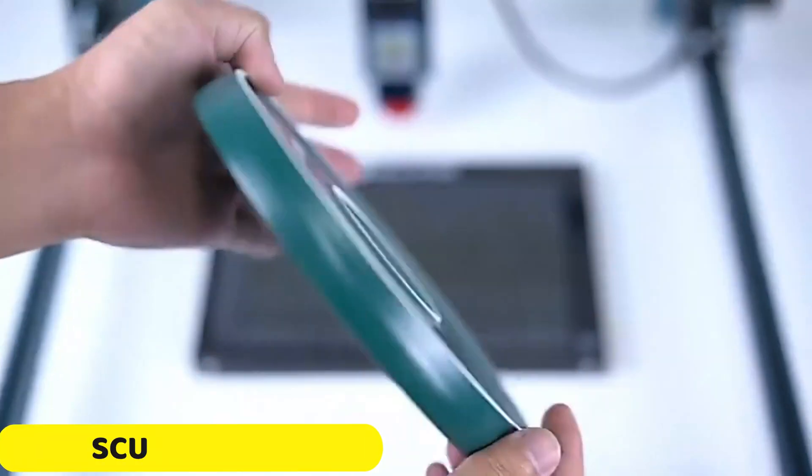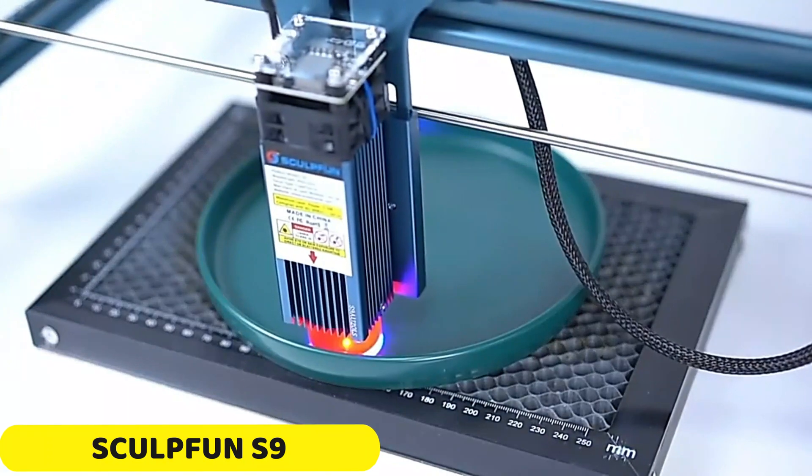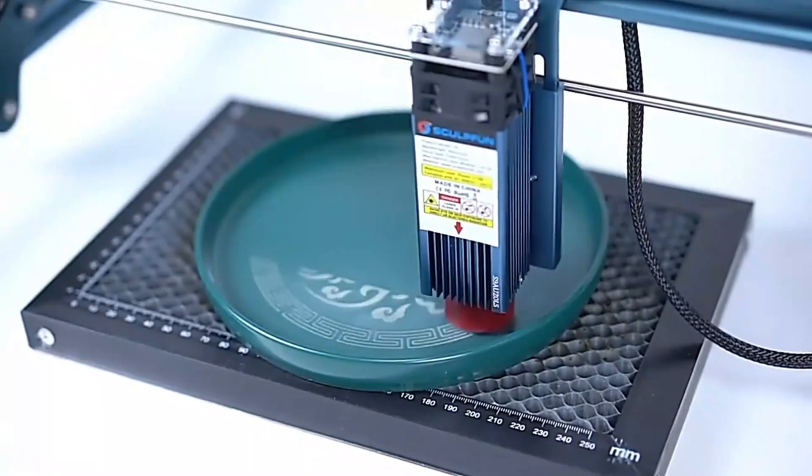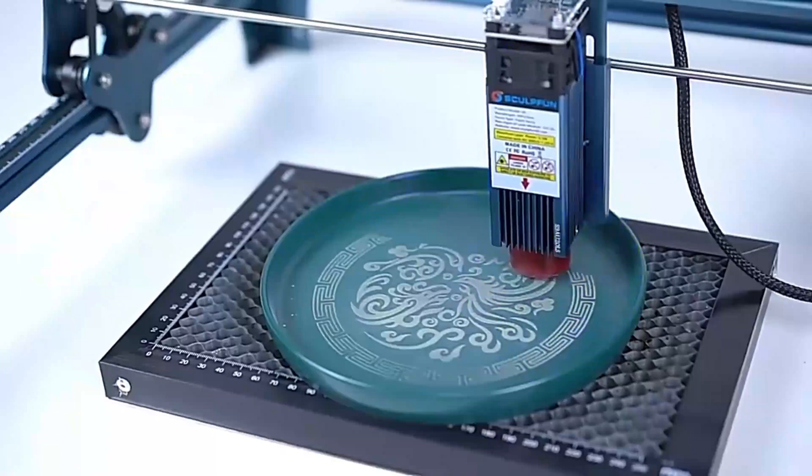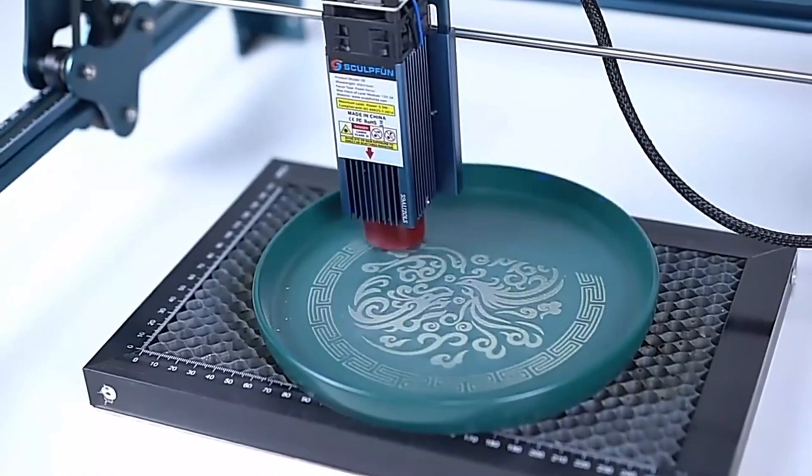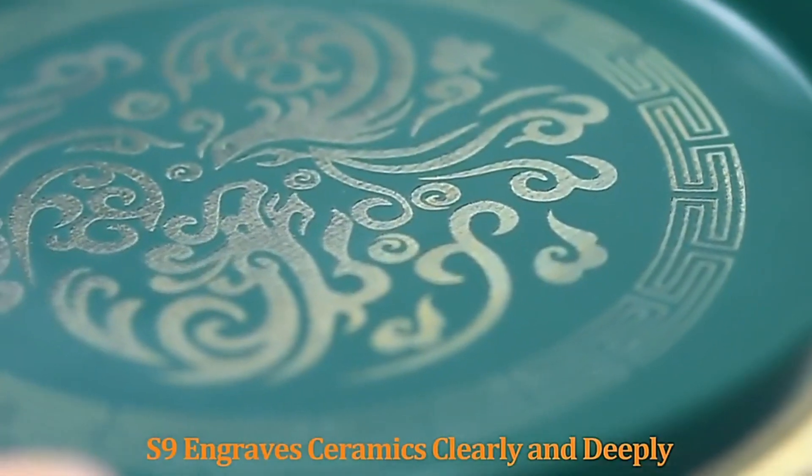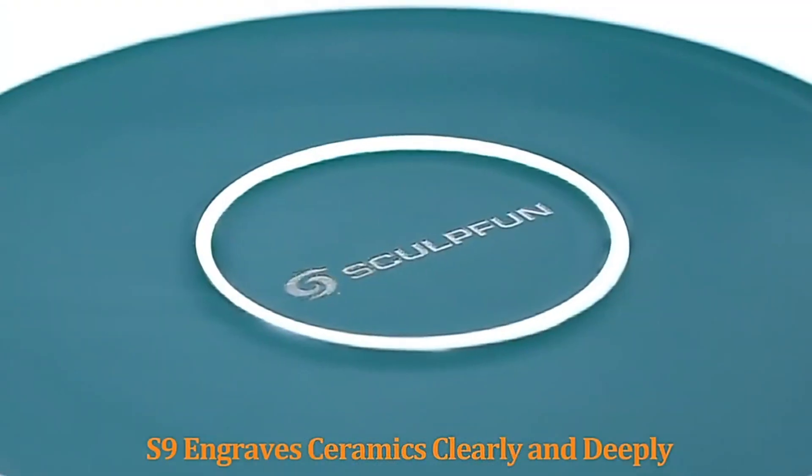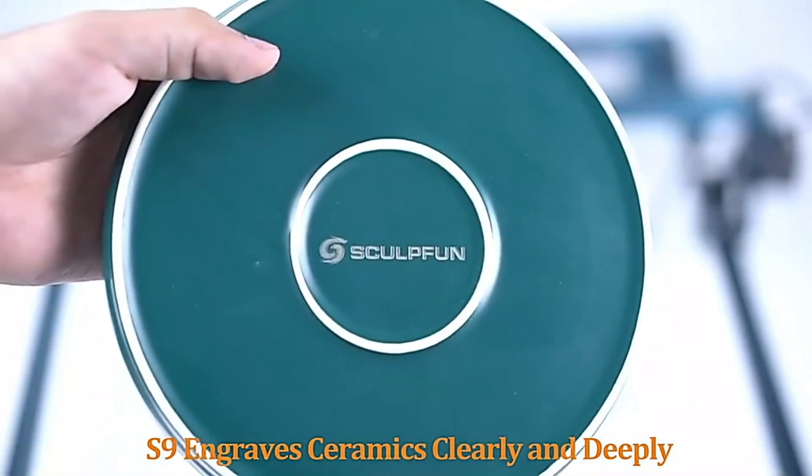Number 2: Sculptfun S9 Laser Engraver. The Sculptfun S9 Laser Engraver is a cutting-edge tool designed to bring artistic visions to life with unparalleled precision and ease. With an expansive engraving area of 410-420mm, it offers ample space for projects of various sizes.